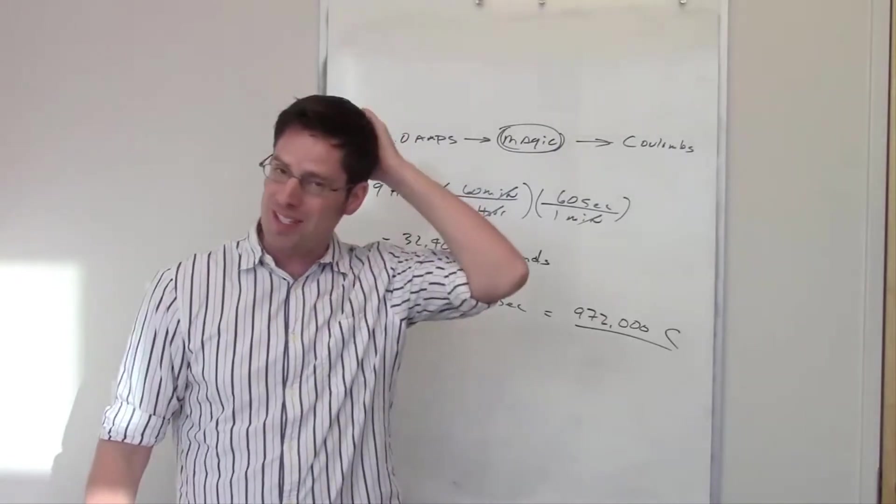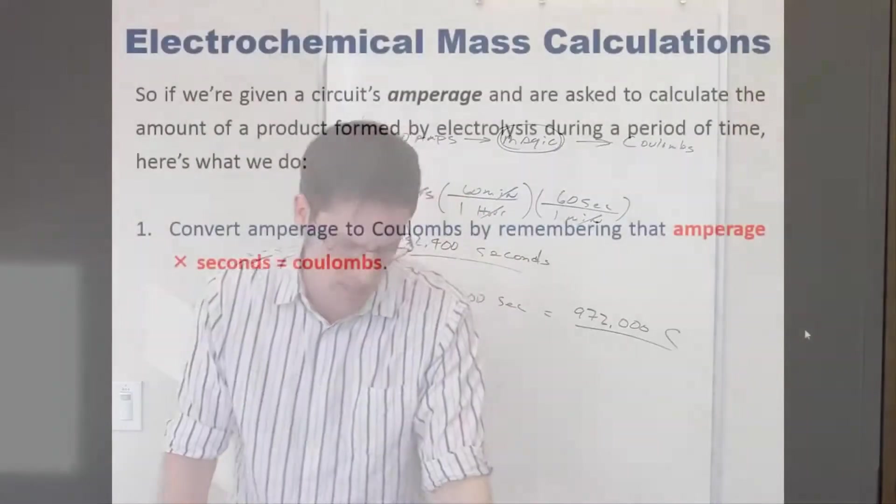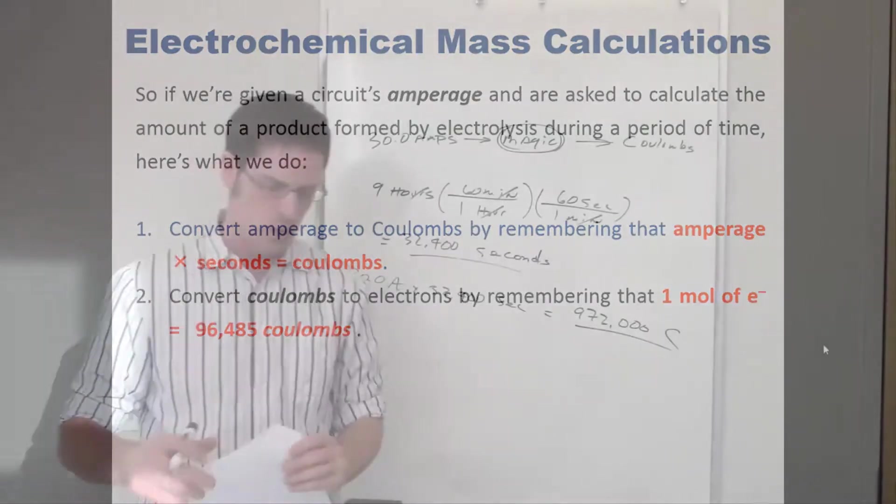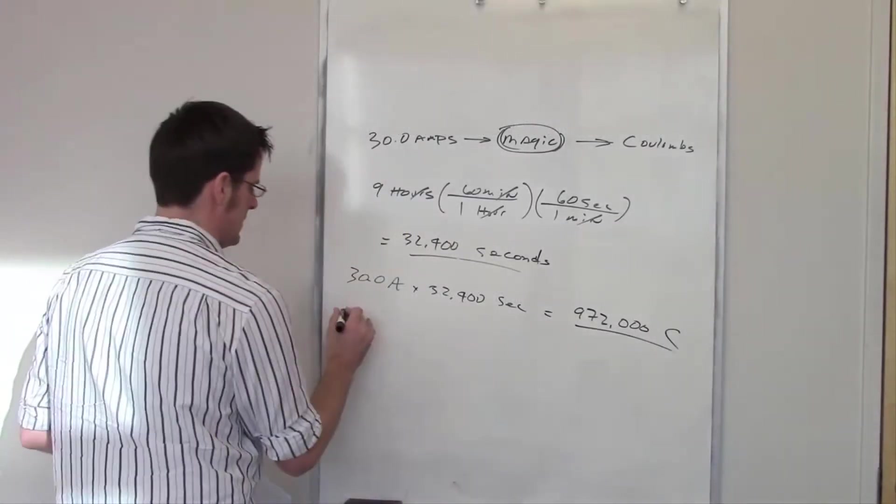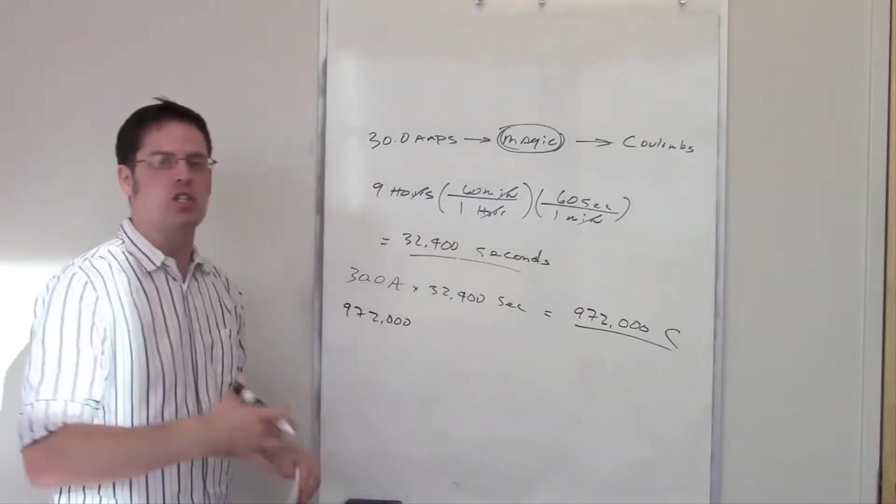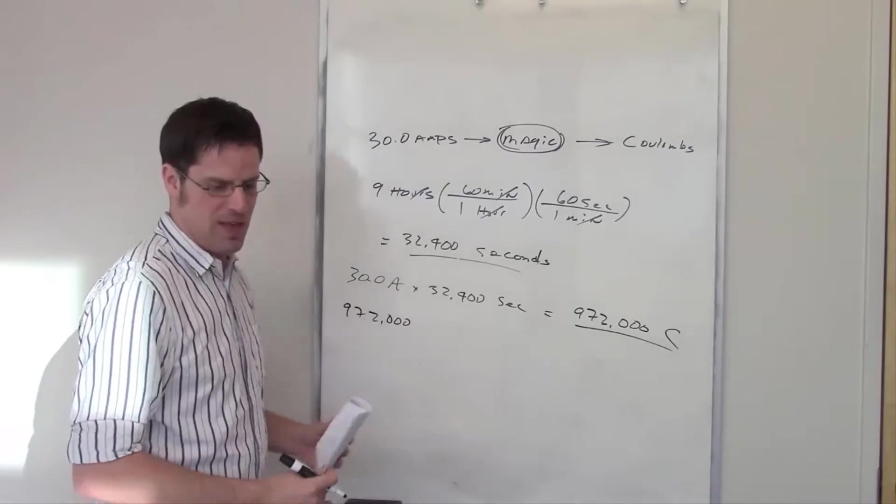So that's step one of this whole process. Now we'll go back to the PowerPoint slide and take a look at step two. Step two says: once you've done the step one stuff, convert coulombs to electrons by remembering that one mole of electrons equals 96,485 coulombs.